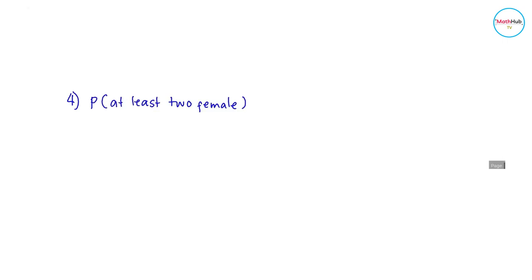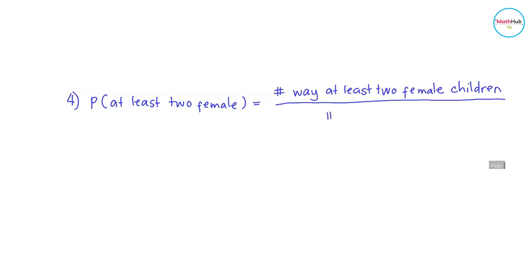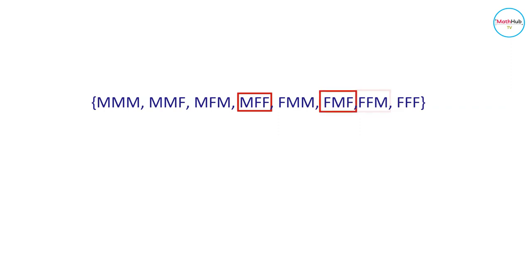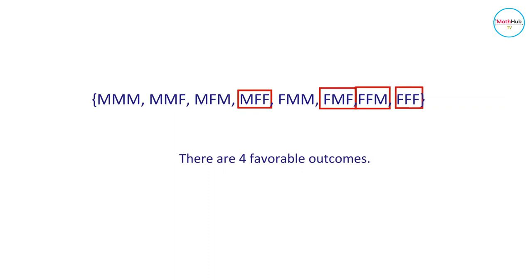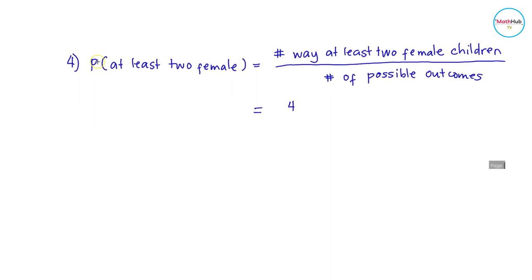Next, we want to find the probability of selecting a family with at least two female children. This equals the number of ways at least two female children can occur divided by the total number of possible outcomes. The outcomes are MFF, FMF, FFM, and FFF — that gives us four favorable outcomes. So the probability is four over eight, which is equal to one-half.